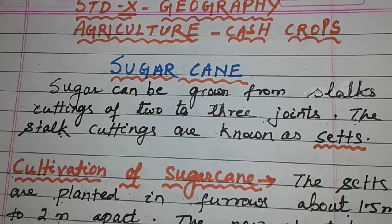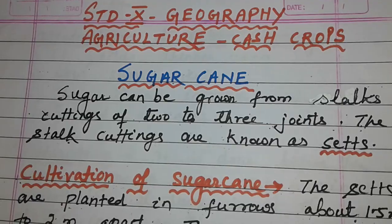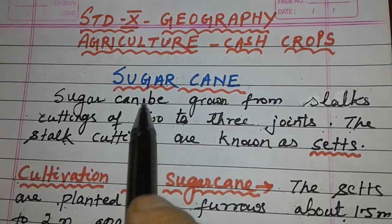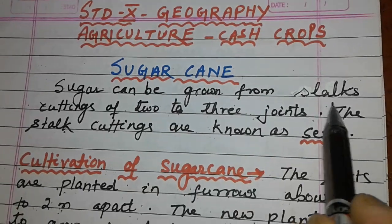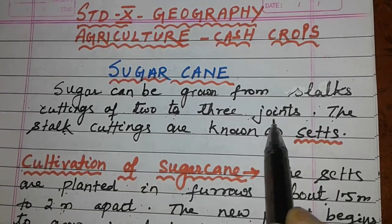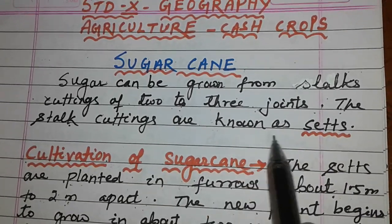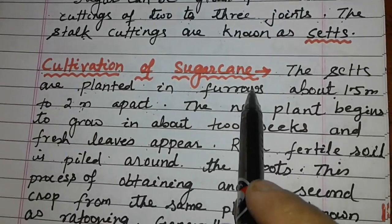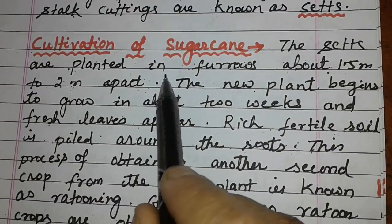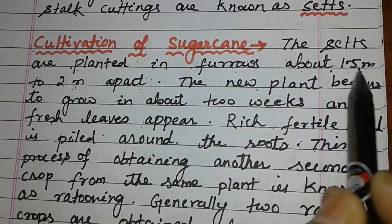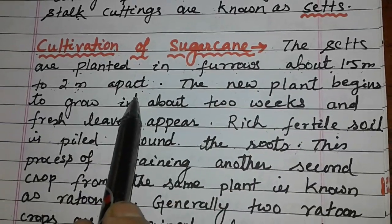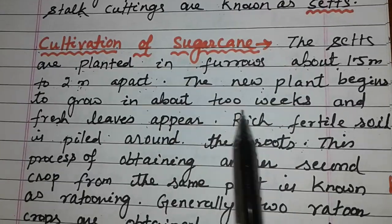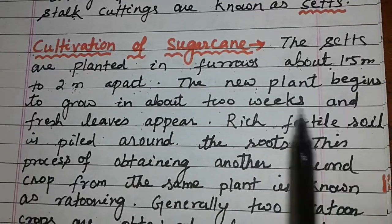Sugarcane can be grown from the stalk cuttings of two to three joints. The stalk cuttings are known as sets. In cultivation of sugarcane, the sets are planted in furrows about 1.5 to 2 meters apart. The new plant begins to grow in about two weeks and the fresh leaves appear.